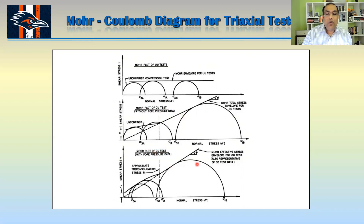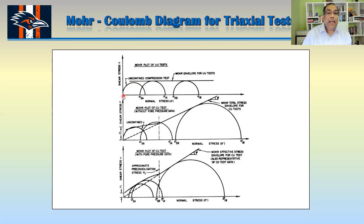For the CU test where you subtracted the pore water pressure, you can see these circles are moving a little bit to the left, which is essentially equal to the pore water pressure that developed at failure. Now, the first circle where sigma 3 equals zero is basically your unconfined compression test. We are showing that one with the UU test because the unconfined compression test is a kind of UU test.